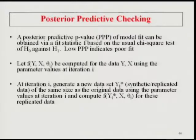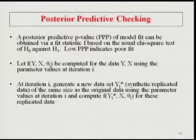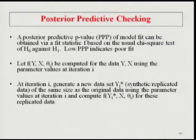In the first two examples, we looked at path analyses, and we had models that were just identified or saturated — all of the paths were included. There was no ability to test the model fit to the data. Now we're going to switch to models where you don't have all paths in the model — some fixed at zero. We'll look at a way to test the model with the help of posterior predictive checking.